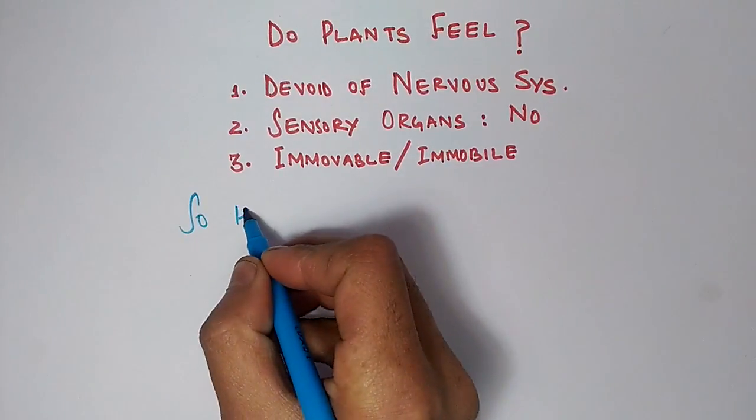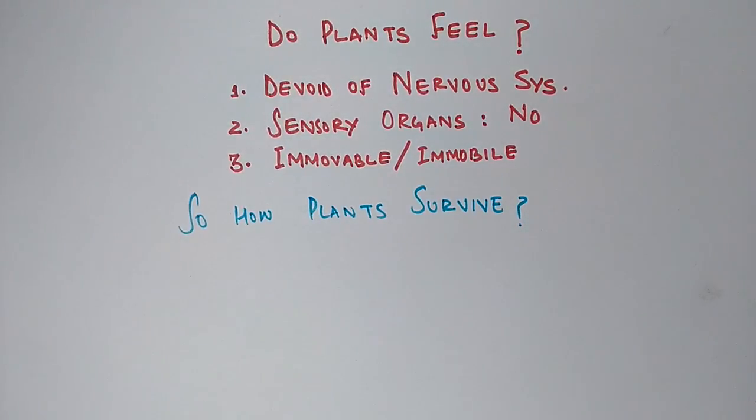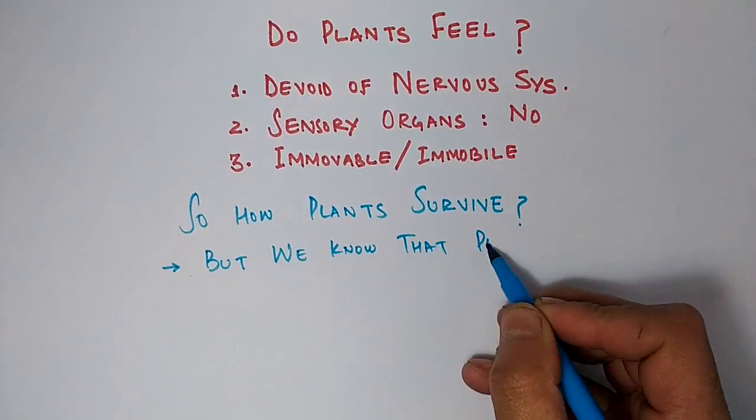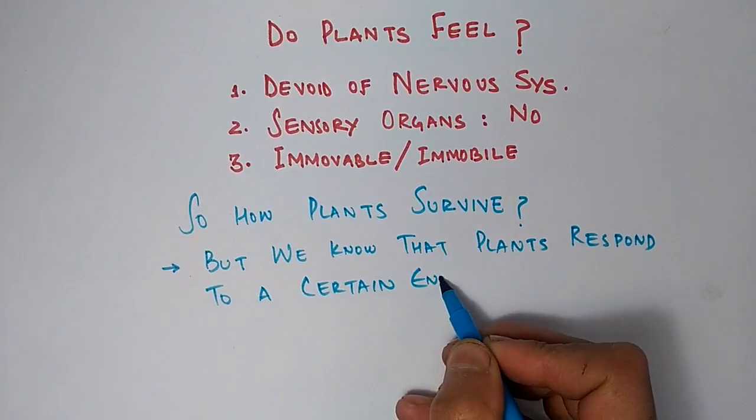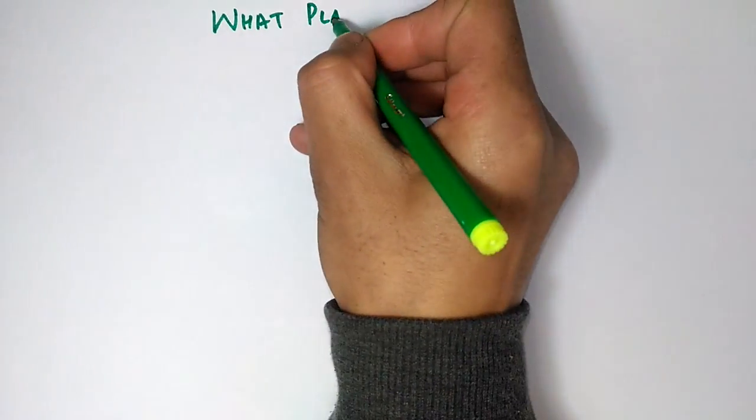So how do plants survive? How are they able to cope up with the environment? We know that the environment poses different kinds of harsh conditions towards plants. So how are these plants able to cope up with the environment and live in these harsh conditions?